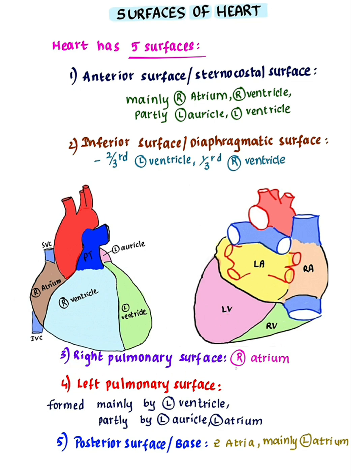Right pulmonary surface is formed by the right atrium. Left pulmonary surface is mainly formed by the left ventricle, and partly formed by the left auricle and left atrium.